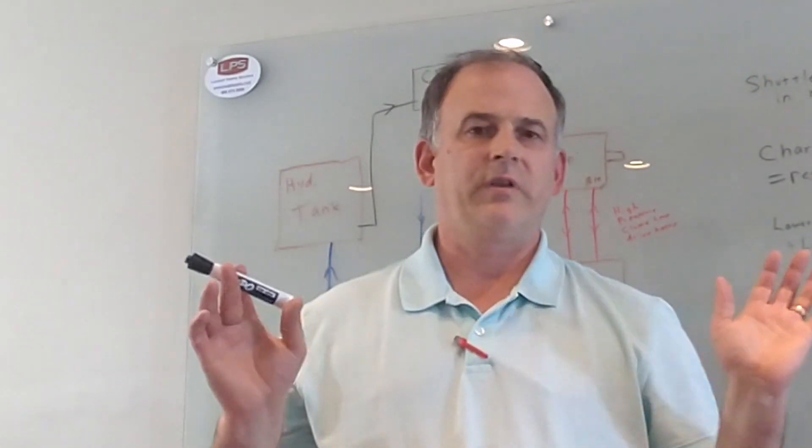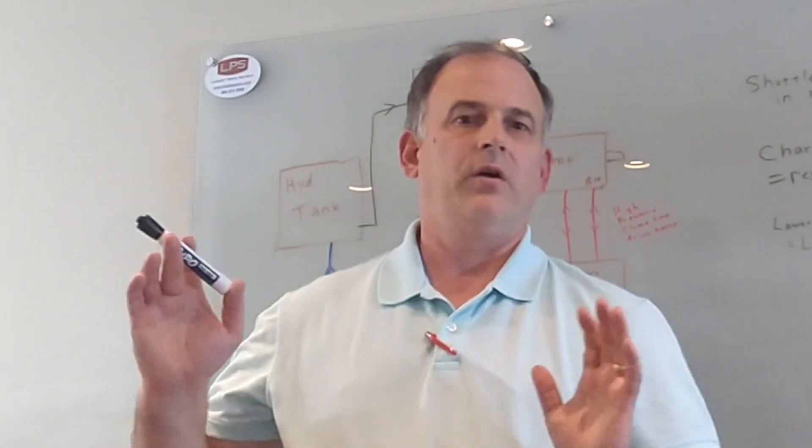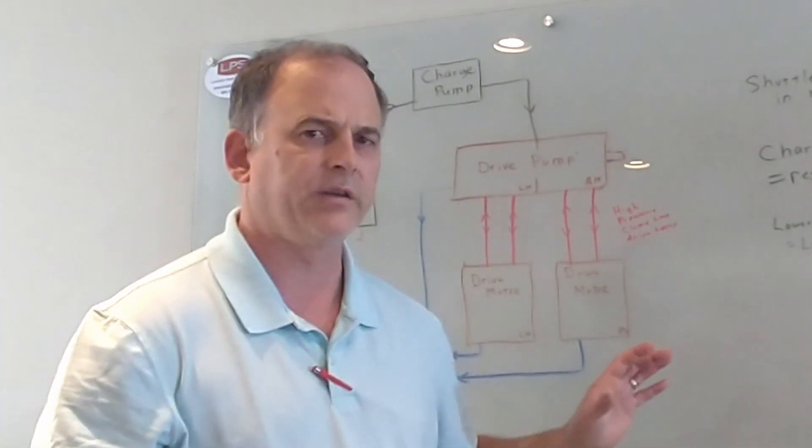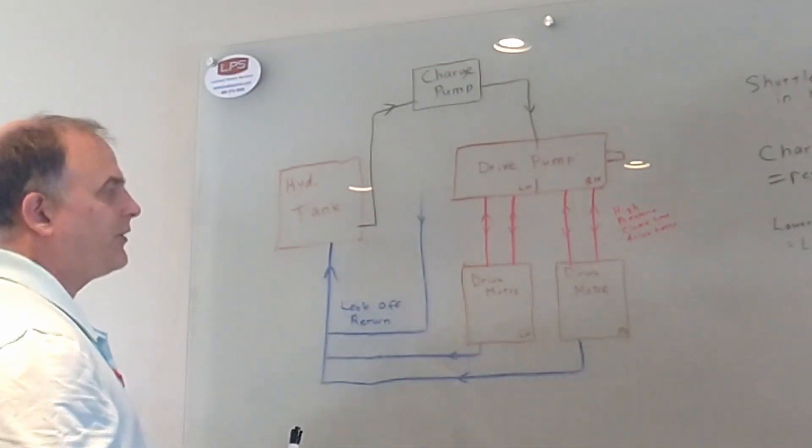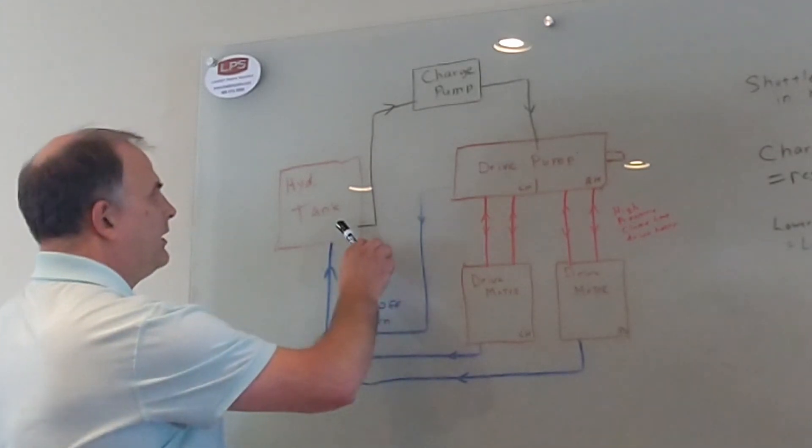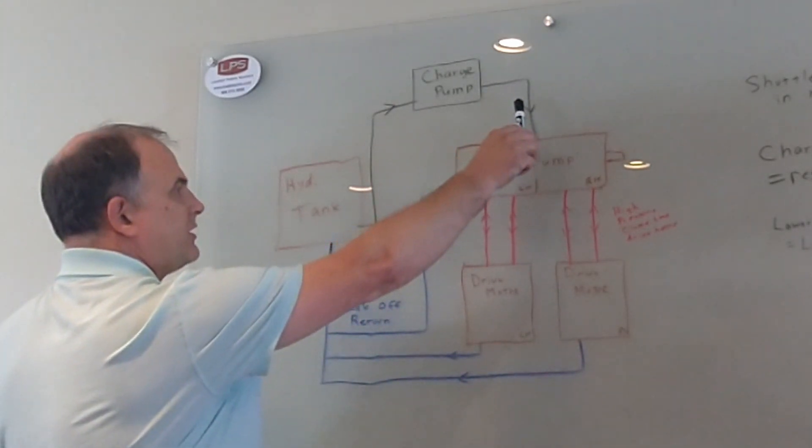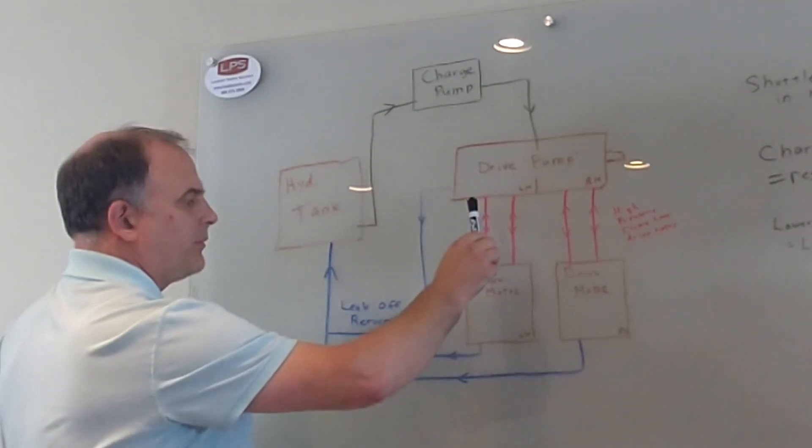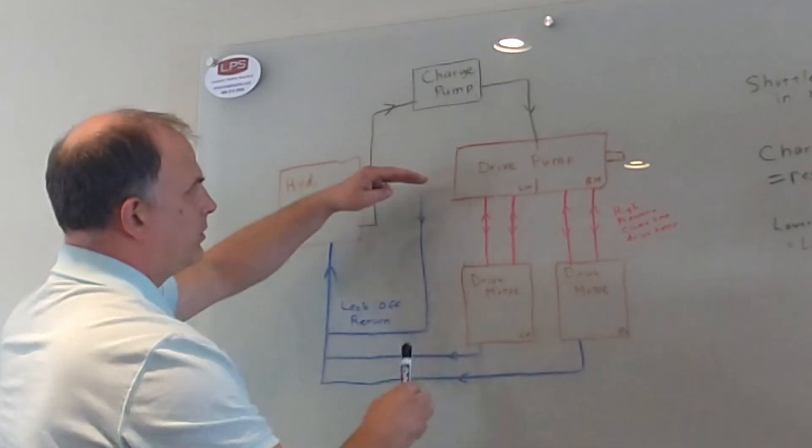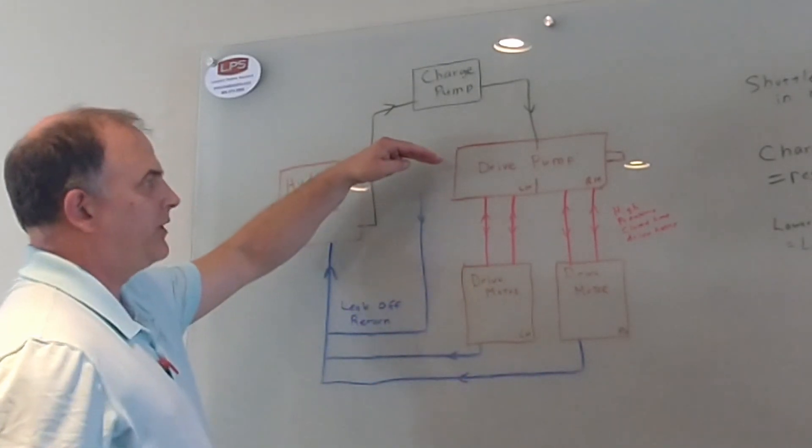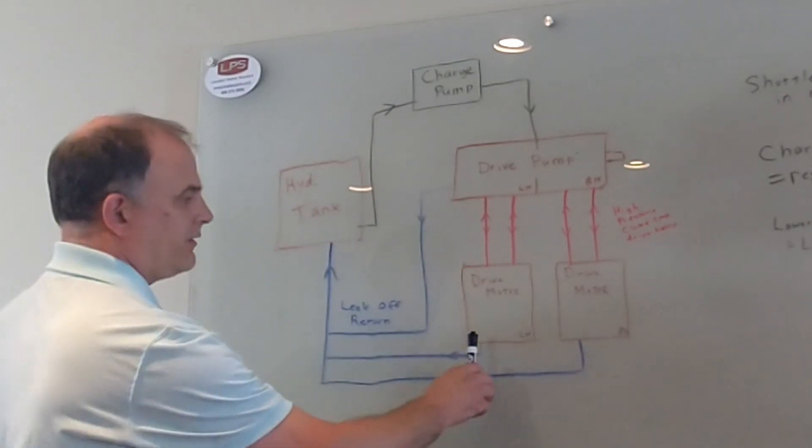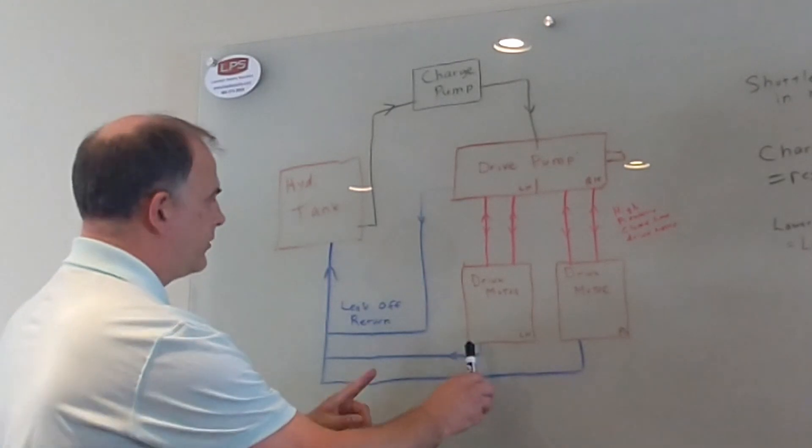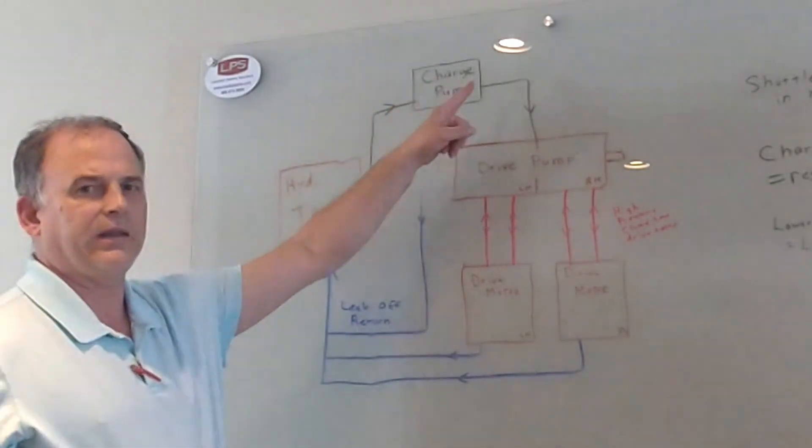I omitted the filters and the oil coolers because those aren't part of understanding how this works and they're in different places on different machines. But to now talk about the charge system: it sucks oil out of the tank, it pushes it into the drive loop through the replenishing valves inside the pump, and it either leaks off or is let off by the charge pressure relief valve in the pump, or it leaks off or is let off by the flushing valves in the motors, and it completes that circuit back to the tank.